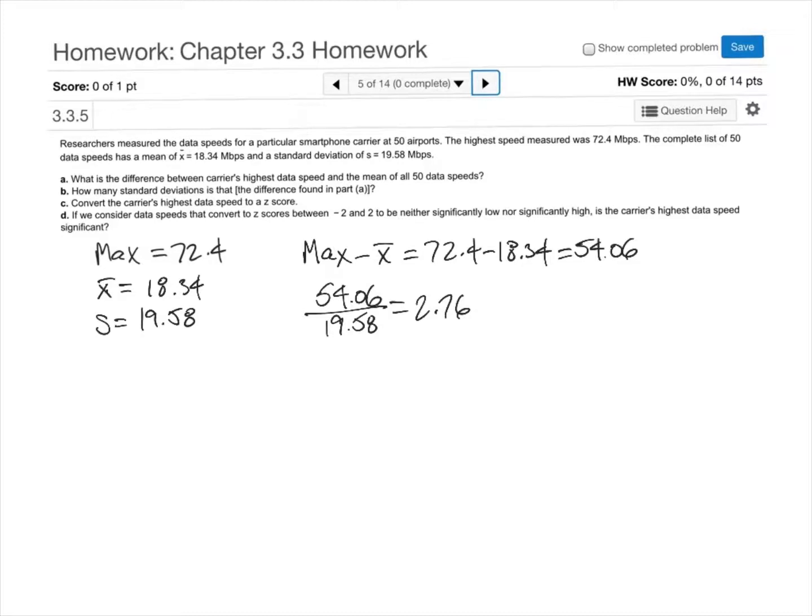The next question says convert the carrier's highest data speed to a z-score. The z-score is the number of standard deviations that a data value lies away from the mean. The formula for the z-score is (x - x̄)/s when we are using sample measures.